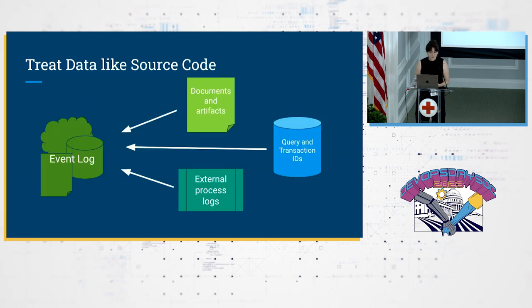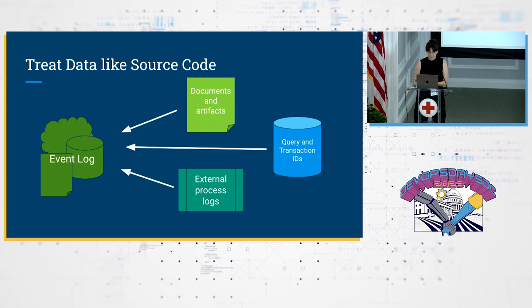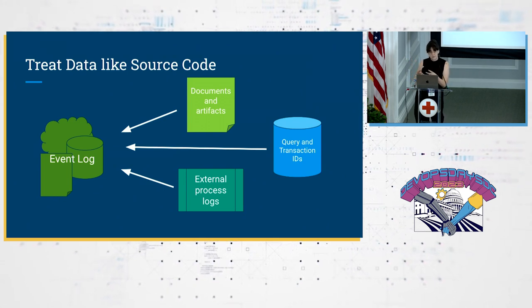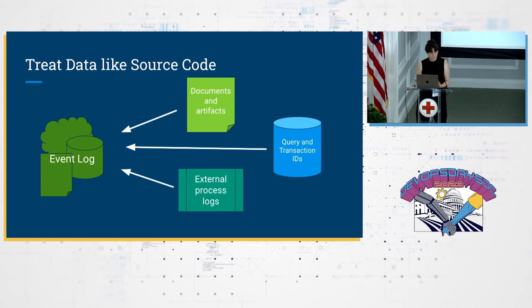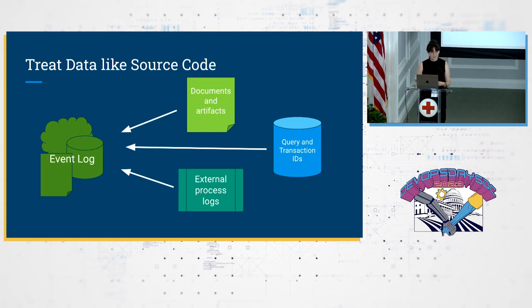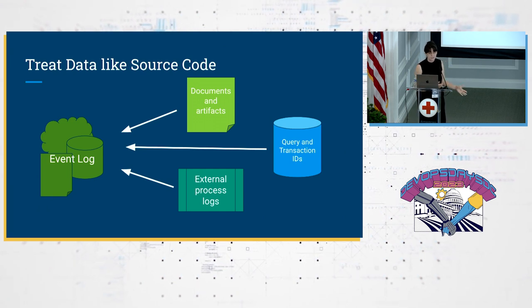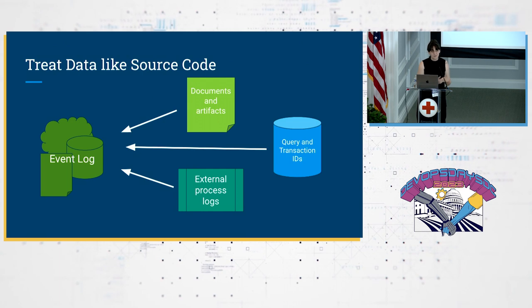What we want to do is create sources of identification so our data teams can easily orient themselves and troubleshoot more effectively. This doesn't require a big investment. We already have lots of information coming out of these steps. If we're using a SQL database, we already have query and transaction IDs. If we're using CSV files and artifacts saved in an S3 bucket, we already have unique identifiers — the path and file name. And if we have external home-rolled processes, this is a great opportunity to add some logging. We can throw all these little bits of identifying information into a centralized event log — a transactional DB, any cloud storage, or even a file on someone's laptop.